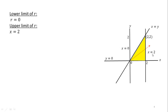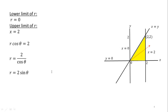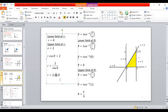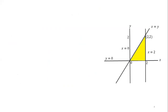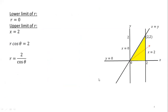For this purpose, we will polarize the equation x equal to 2 for the exiting boundary. We know that the value of x is r cos theta. So we have r cos theta equal to 2. Dividing both sides by cos theta, we have r is equal to 2 over cos theta, which is 2 secant theta. So the upper limit of r is 2 secant theta.